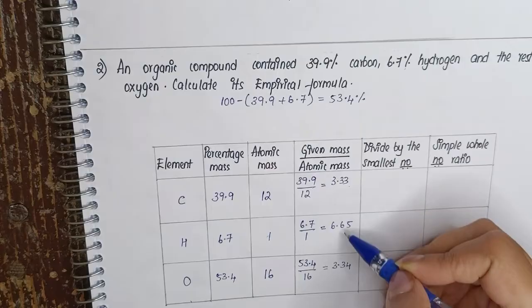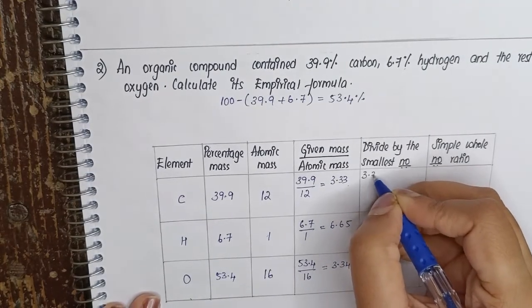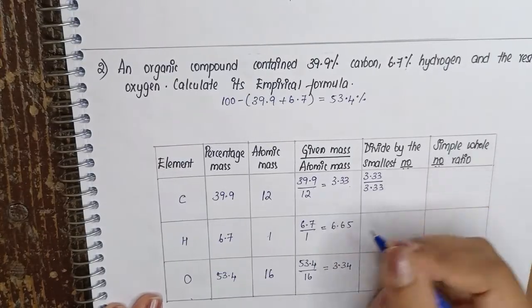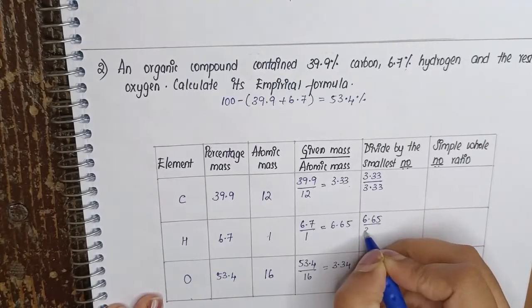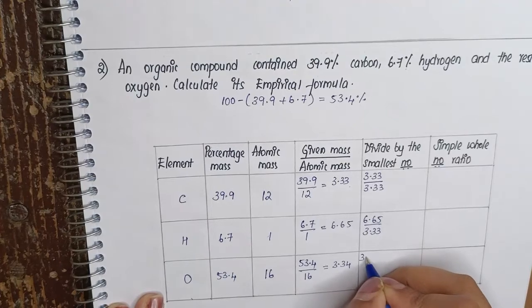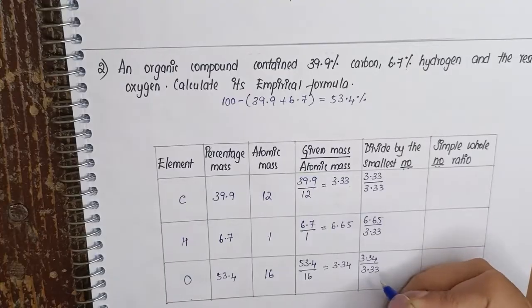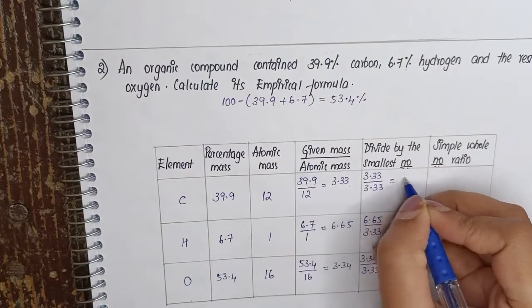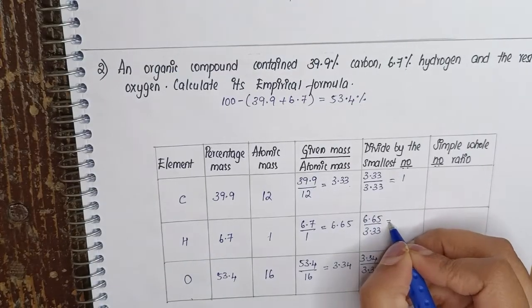Each number here has to be divided by the smallest number. So here 3.33 divided by 3.33, then you have 6.65 divided by 3.33, and here we have 3.34 divided by 3.33. When we calculate this, you will get 1. In the second one you will get 1.99.